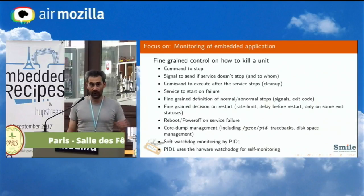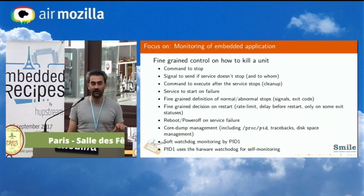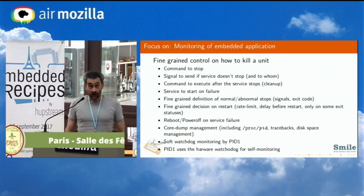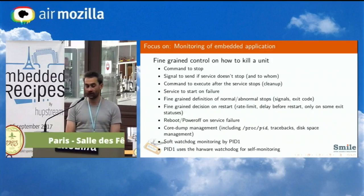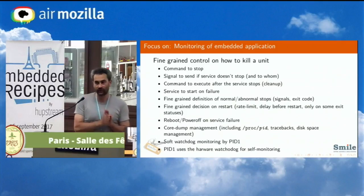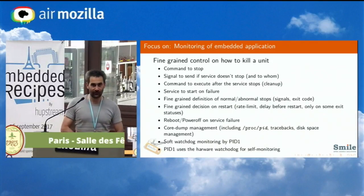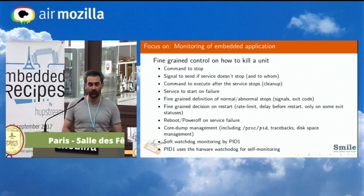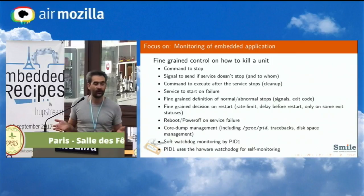You can start a service on failure — a service being a generic term for a systemd daemon. You have very fine-grained definition of what is a normal versus abnormal stop. If your command exits with a non-zero code, you can specify which non-zero return codes are acceptable. You can say it's normal for your application to abort on SIGABRT but not on a segmentation fault, for instance.